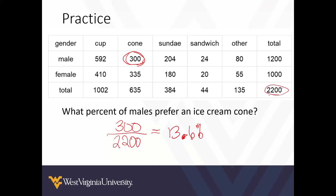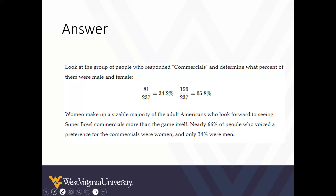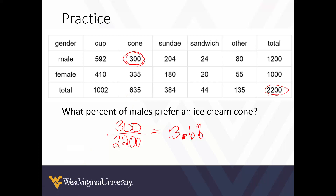Notice I divided by the grand total in this case, and not the total number of cones or the total number of males. That's because of how the question was worded. If the question had been 'given people who prefer cones, what percent were male?' or 'given an ice cream goer is male, what percentage prefer a cone?' — those conditions change the denominator. No condition: divide by your grand total.